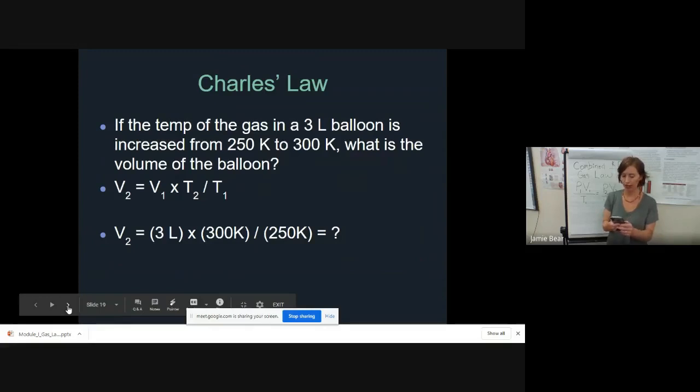If we say three liters times 300 divided by 250, we get 3.6. Once again, we're going to ask ourselves, does that make sense? Thinking about what the equation is, if we increase the temperature, our volume will increase. So 3.6 liters.